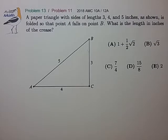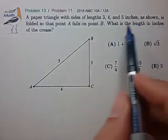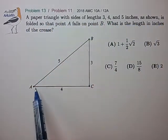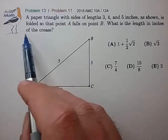Hi, this is problem 13 from the 2018 AMC 10A. A paper triangle with sides 3, 4, 5 as shown is folded so that point A falls on point B. What is the length of the crease?